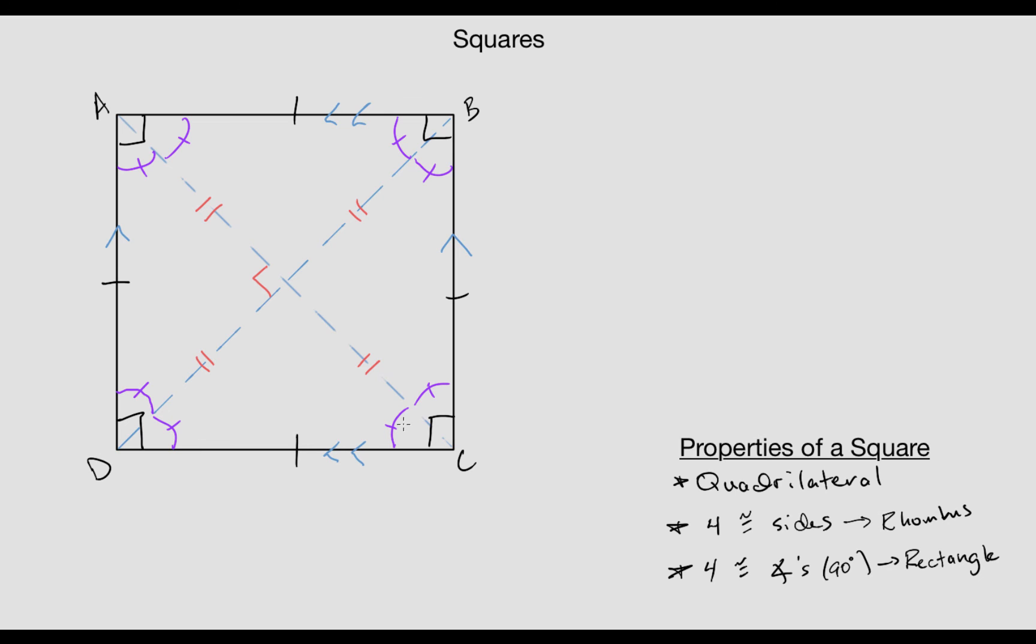The only difference between this and a rhombus or rectangle is knowing which properties of the square come from the rhombus and which come from the rectangle. But it's all the same properties, so if you can remember the basic symmetry and those basic properties, you shouldn't have too much trouble with squares.